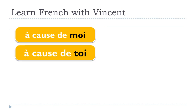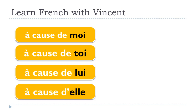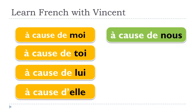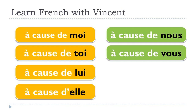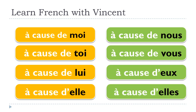À cause de moi, à cause de toi, à cause de lui, à cause d'elle, à cause de nous, à cause de vous, à cause de eux, à cause d'elles. Notice that for « elle » and « elles », you drop the 'e' of 'de' and add an apostrophe: « à cause d'elle », « à cause d'elles ».